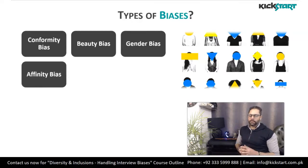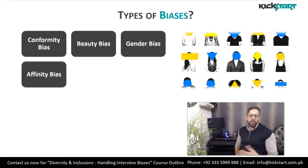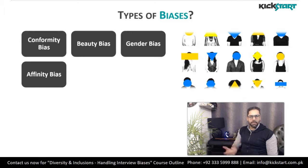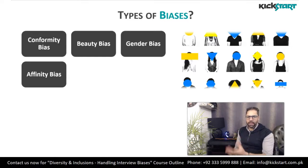Then we have the affinity bias. For example, you come across a candidate who belongs to the same town you grew up in, studied at the same school, speaks the same language, or has the same hobbies. Just because you feel they are similar to you, you automatically develop a bias towards that individual and may not test them as thoroughly as you should during the interview process. This is especially common in universities, where preference is given to candidates from the same university.